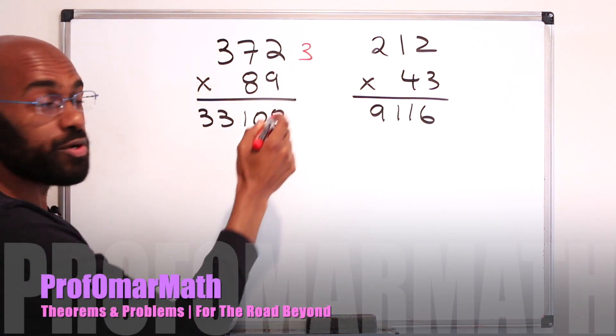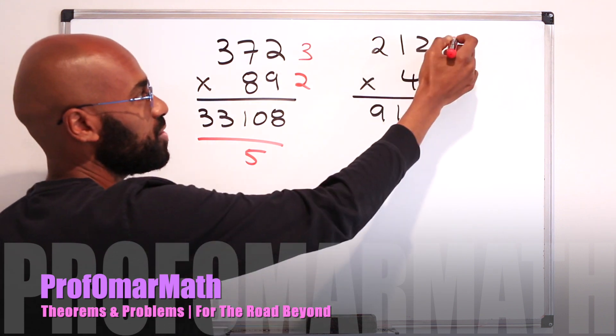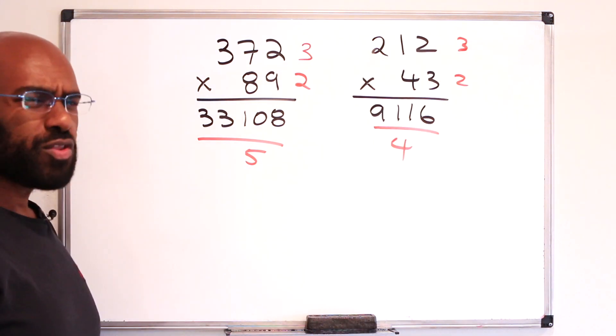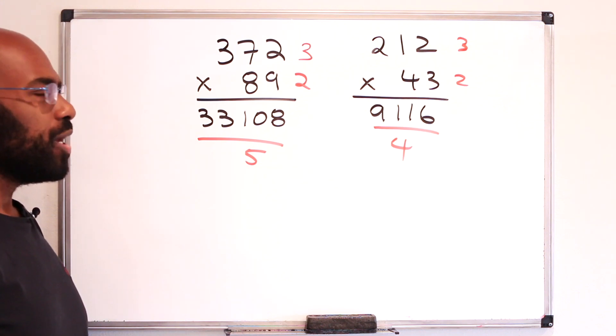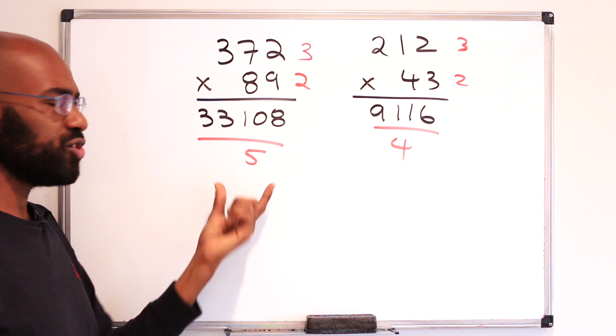On the left, we have a 3-digit number and a 2-digit number and their product is a 5-digit number. Whereas here we have a 3-digit number and a 2-digit number and the product is a 4-digit number. So the question I have is, in general, what's the probability you'll end up with a 4-digit number versus a 5-digit number?